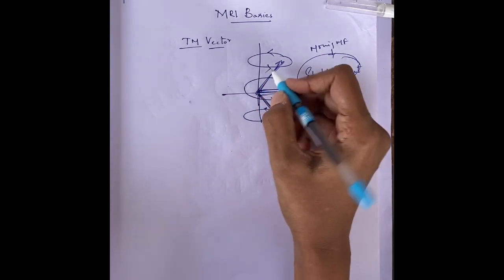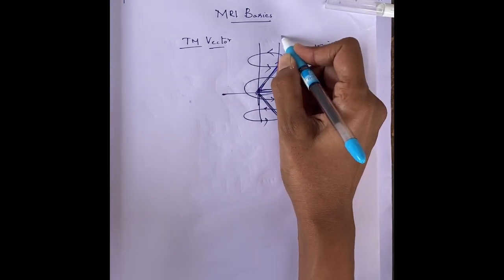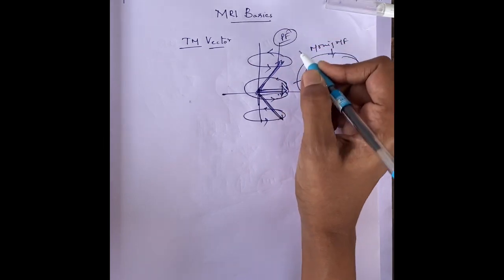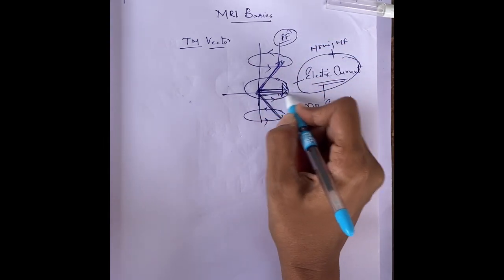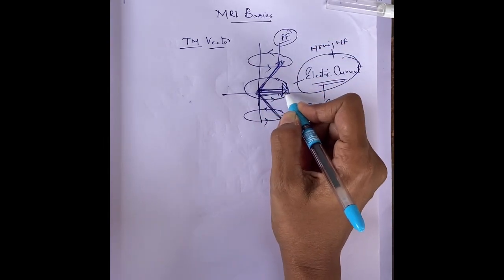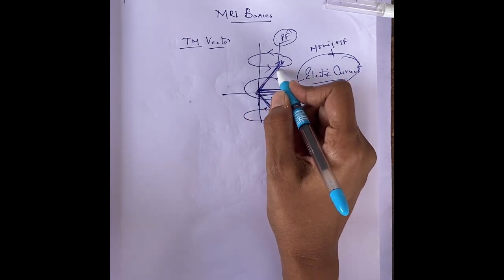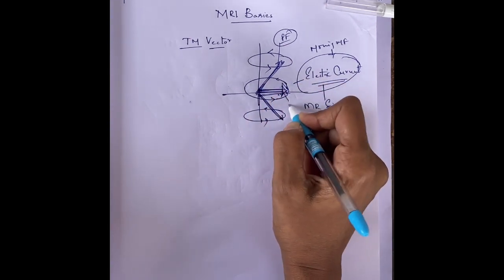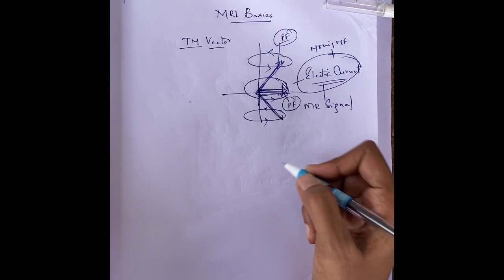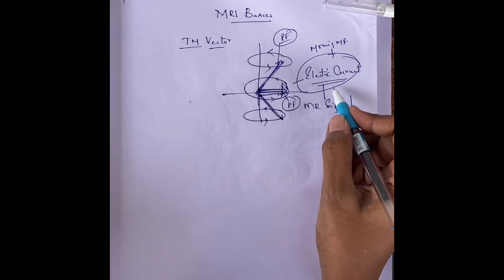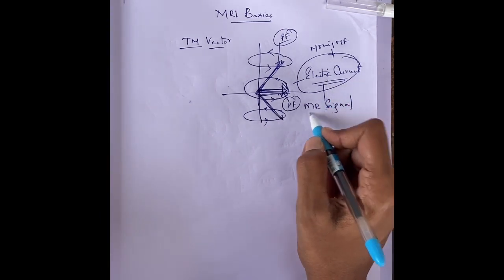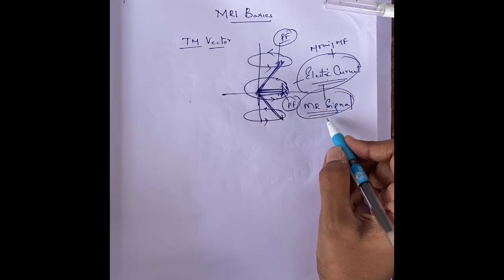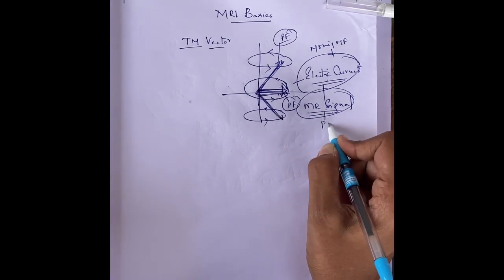These precessing protons have a precession frequency. So as this transverse magnetic vector also moves in phase with the precessing protons, it also has a precession frequency. In turn, the electric current from which we get the MR signal also has a precession frequency.